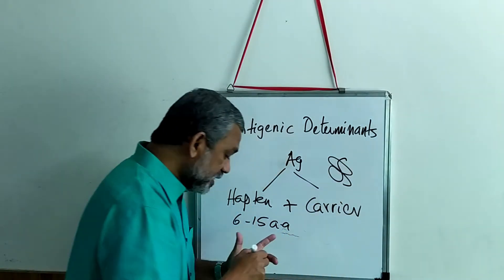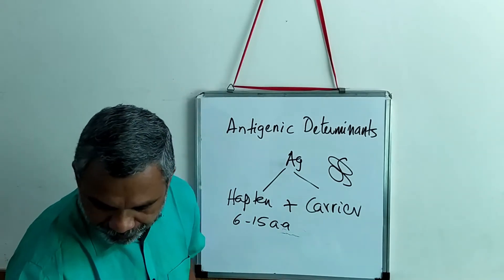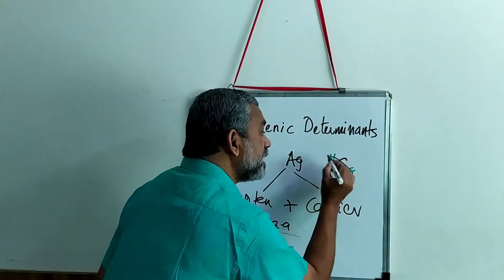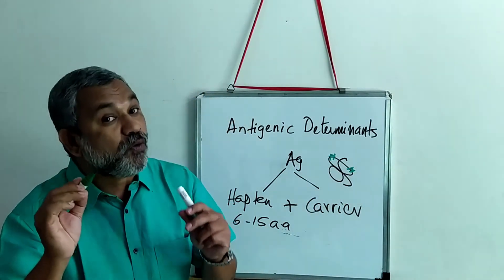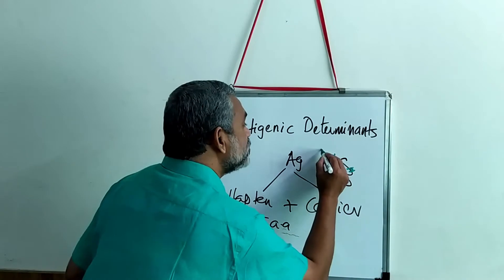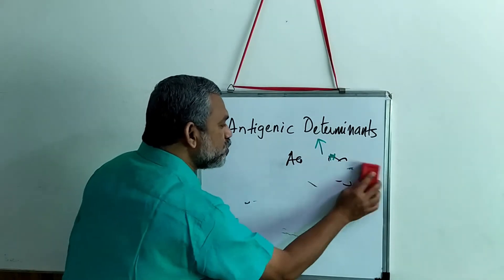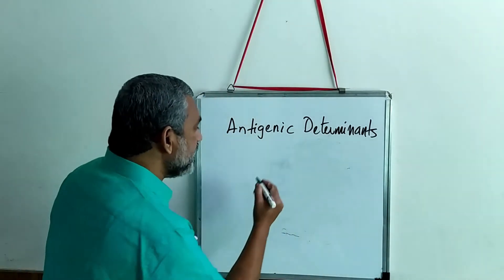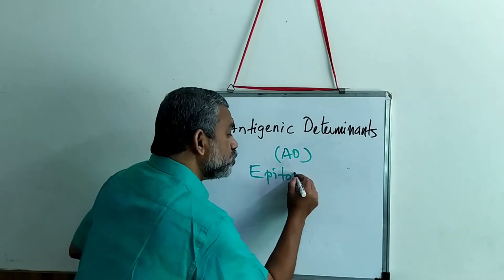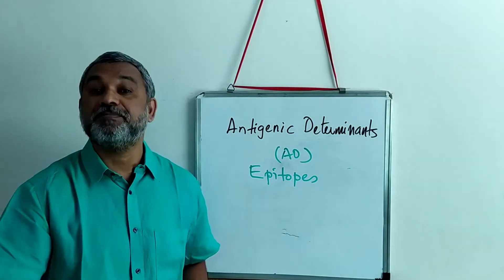If this is an antigen, these particular regions will be projected outward. In the sequence of amino acids, a few sequences will be projected outward — this is the region which is showing the foreignness of a particular antigen. These regions which are immunogenic are what we call antigenic determinants, also abbreviated as AD. They are also known as epitopes — epitopes are nothing but the antigenic determinants of an antigen.